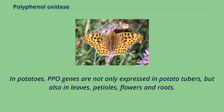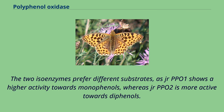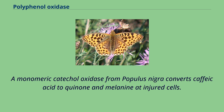In potatoes, PPO genes are not only expressed in potato tubers, but also in leaves, petioles, flowers and roots. In walnut, two different genes encoding polyphenol oxidases have been identified. The two isoenzymes prefer different substrates: juglans PPO1 shows higher activity towards monophenols, whereas juglans PPO2 is more active towards diphenols. A monomeric catechol oxidase from Populus nigra converts caffeic acid to quinone and melanin in injured cells.